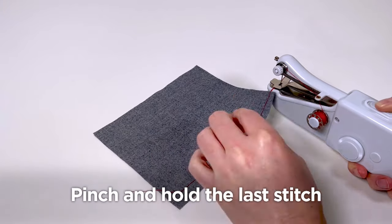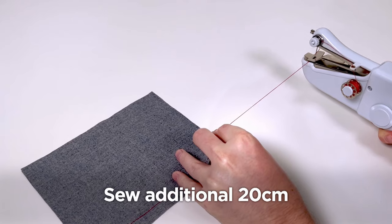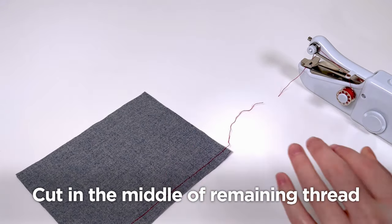Once you've finished your stitching, pinch the last stitch so that nothing comes free, and let the machine sew for a bit longer. We recommend giving yourself around 20cm of additional thread. Next, you cut in the middle of the thread.